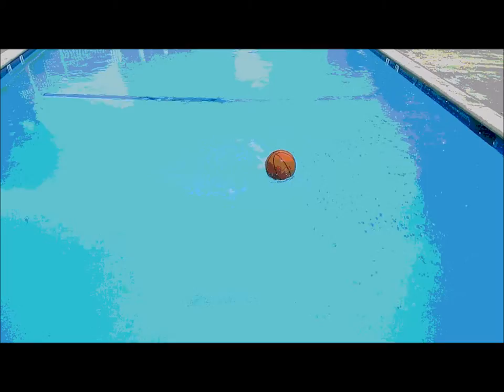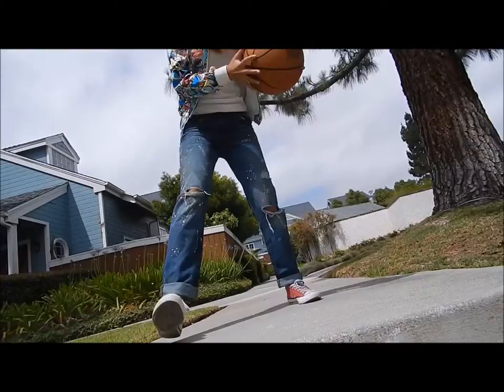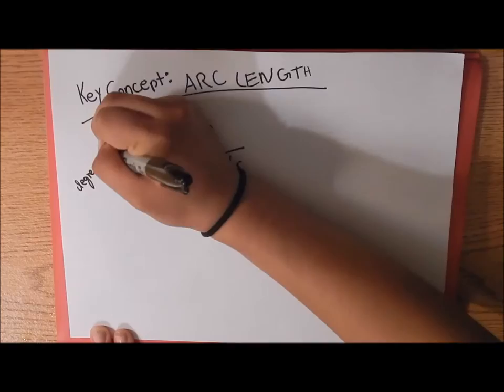Arcs are congruent if, and only if, their corresponding chords are congruent. Don't get it wrong — degree measure and length are not at all the same.